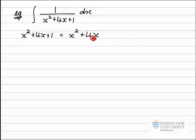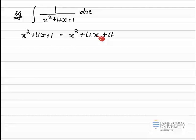The process of completing the squares requires me to halve that coefficient, which is 2, and square that, which is 4. I add in that 4 right there. To make these two lines equal, I then have to subtract 4, and I've also got the plus 1 here as well. So I add in the plus 1 to make sure they're equal.